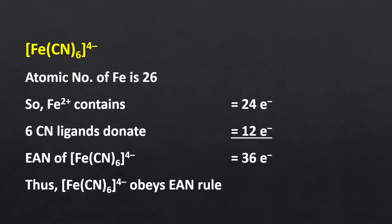For the hexacyanoferrate ion complex, the atomic number of iron is 26. Iron(II) will contribute 24 electrons. Each cyanide ligand will donate 2 electrons, giving 12 electrons from 6 ligands. Consequently, the effective atomic number of this complex is also 36, which makes it stable.